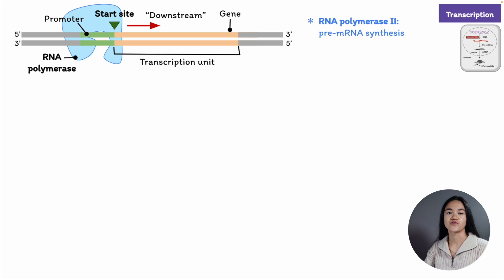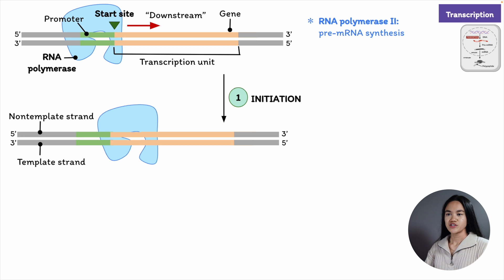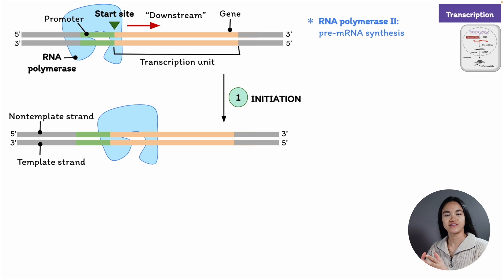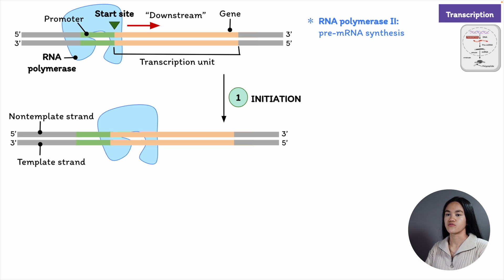Let's go through initiation. The promoter sequence of a gene includes the transcription start point. RNA polymerase binds to the promoter in a precise location and orientation, which determines where transcription starts, the direction it will travel, and which strand is used as a template. The polymerase determines which strand to use because every promoter has a certain polarity — it contains two different nucleotide sequences arranged in a specific 5' to 3' order upstream of the start site. Since polymerase can only synthesize in the 5' to 3' direction, once it's bound, it must use the DNA strand oriented in the 3' to 5' direction as its template.